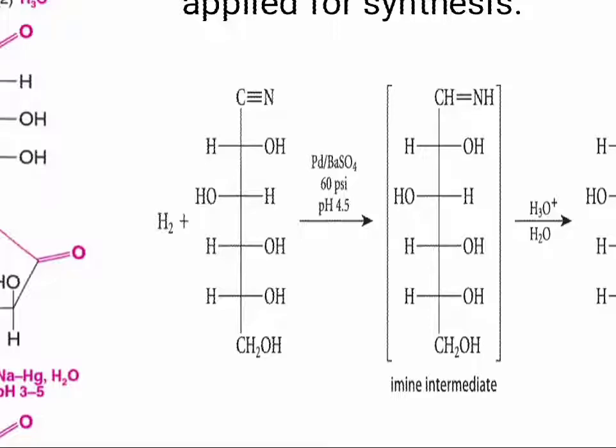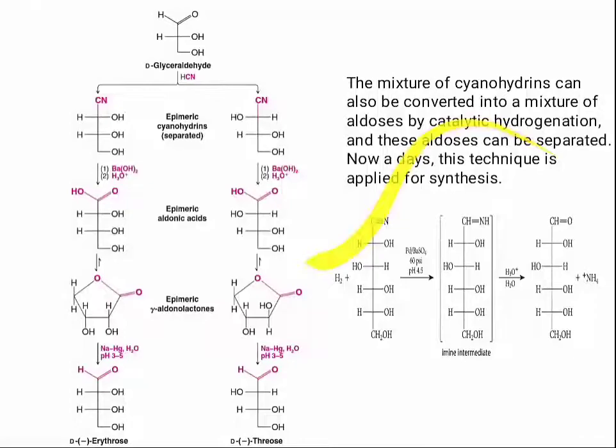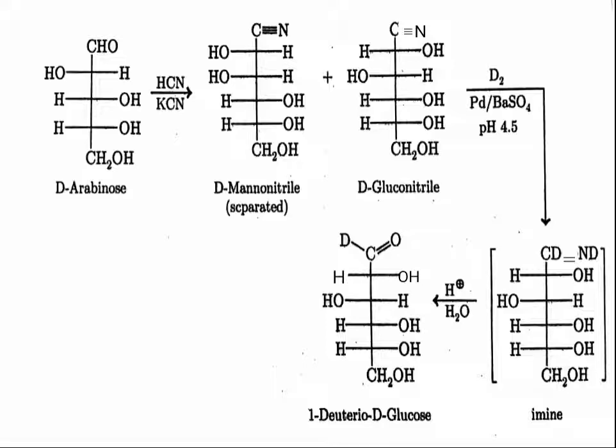This one is D-arabinose. If you add HCN and KCN, this is just a step-up reaction — the CHO will give CHOH and CN will be added, extending the chain by one carbon.